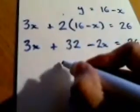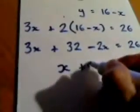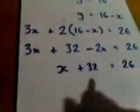So simplifying this equation now I've got x plus 32 equals 26, and solving that equation, I take away 32 from each side. I end up with x will equal minus 6.